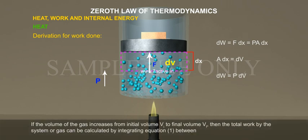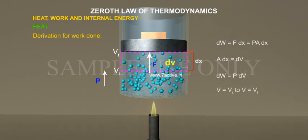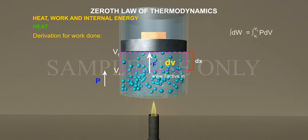If the volume of the gas increases from initial volume VI to final volume VF, then the total work by the system or gas can be calculated by integrating equation 1. Integration of dW is equal to integration of P dV from VI to VF. W is equal to P times V from VI to VF, which equals P into VF minus VI.